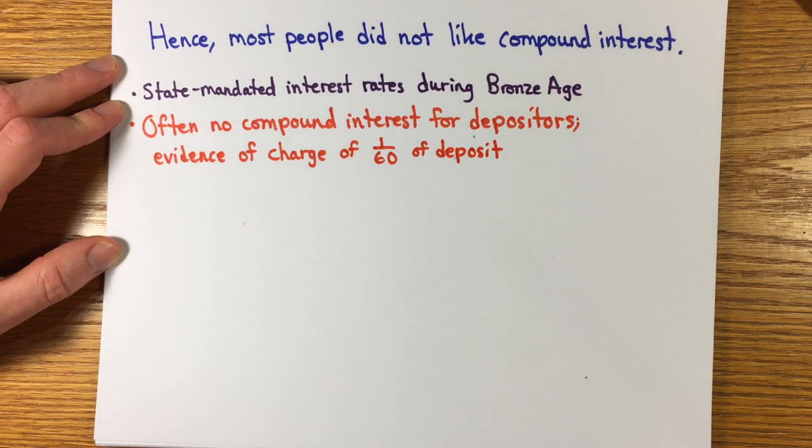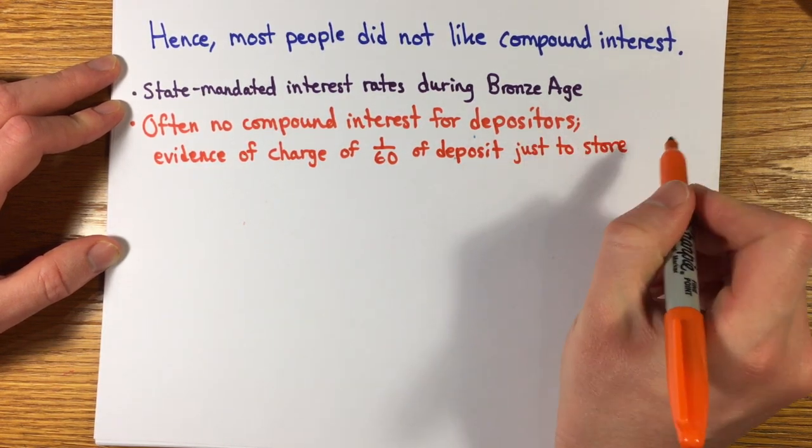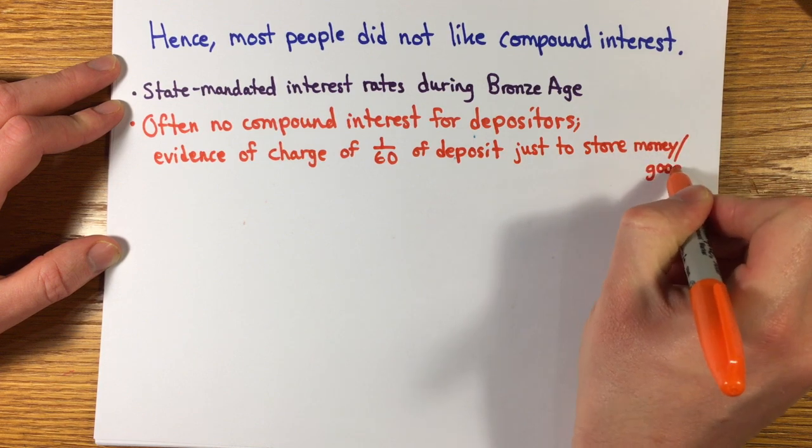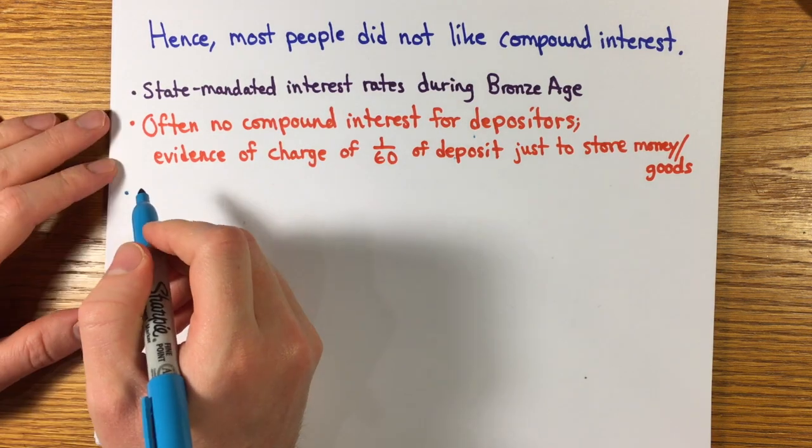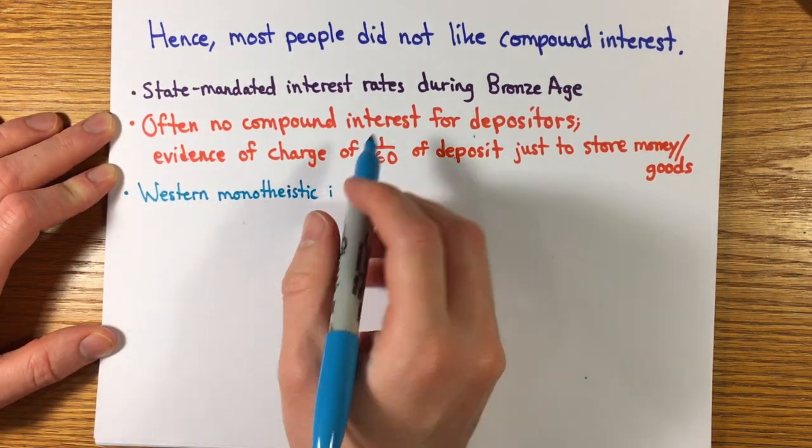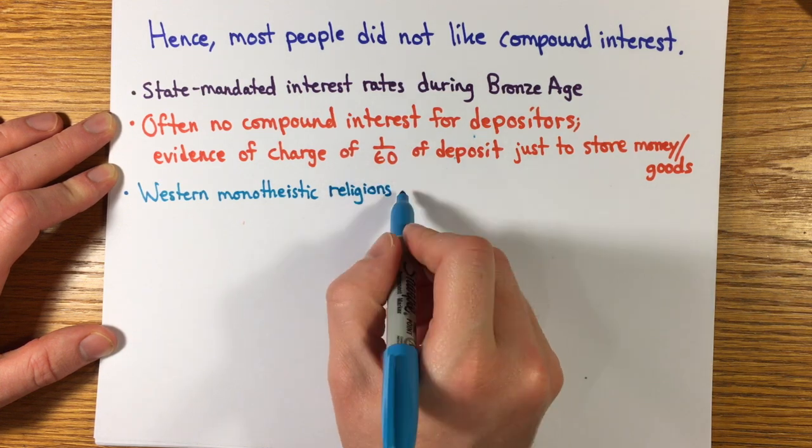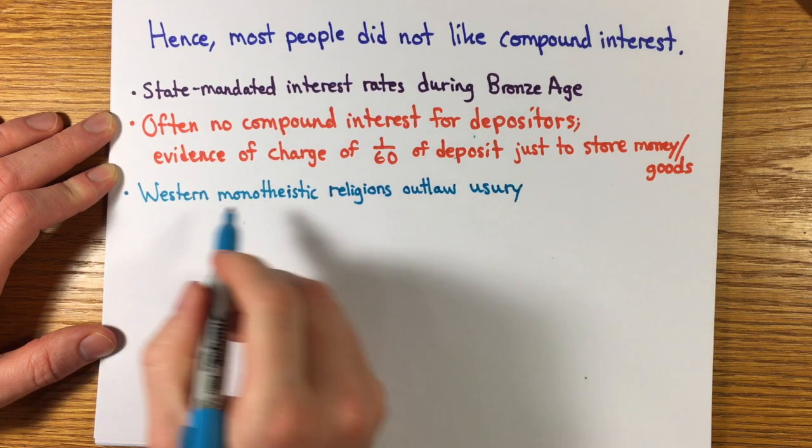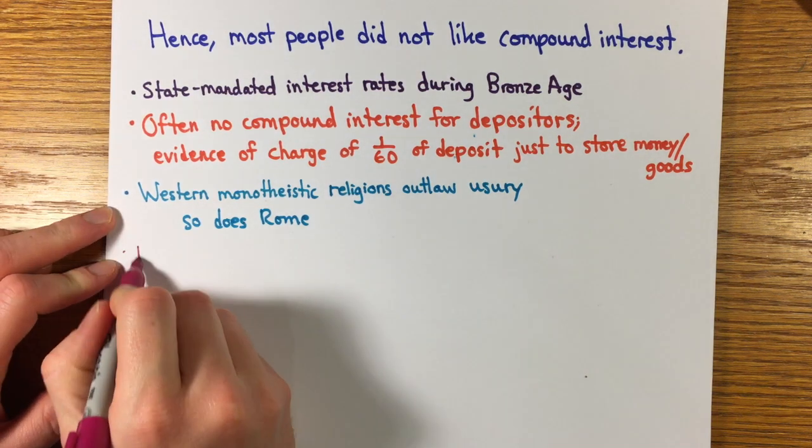So compound interest only favored creditors. All the Western monotheistic religions from the periods that followed had injunctions against usury, usually defined as lending with interest, though sometimes interpreted as lending at too high a rate. And of course compound interest was especially evil, as it was thought of as interest on interest. Ancient Rome had an extensive banking and credit system with interest rates set by the state, but it was simple interest, not compound interest, which was outlawed.